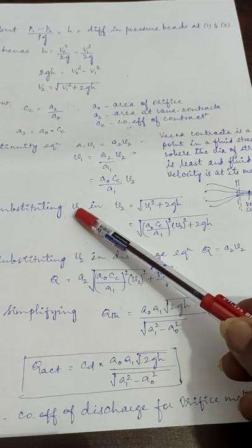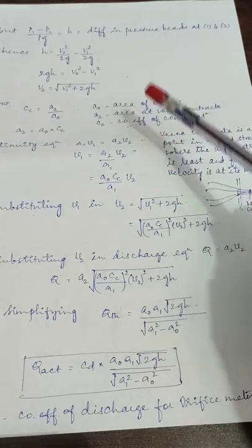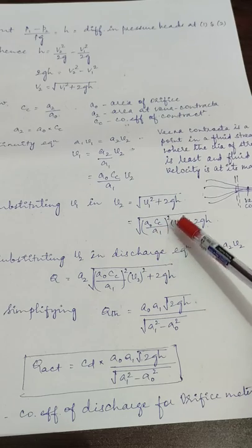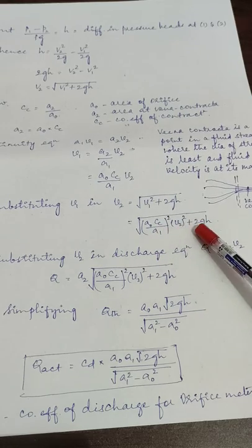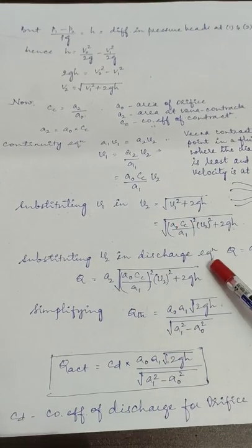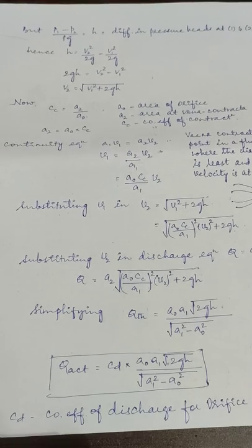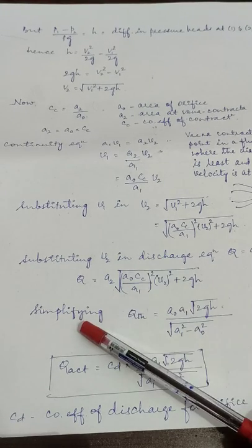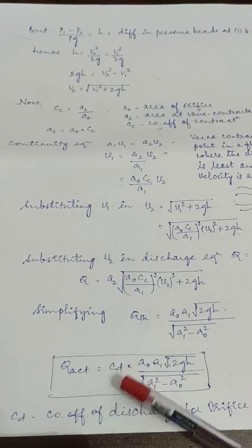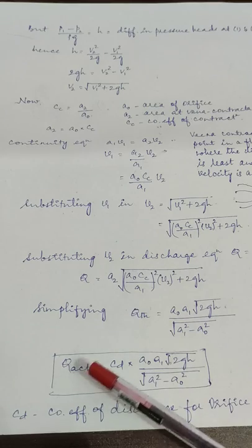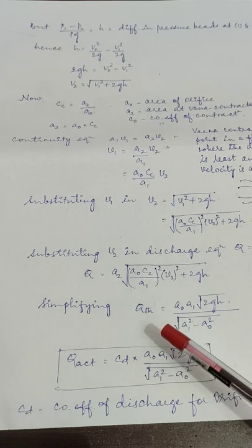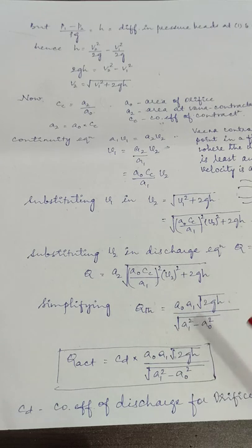Substituting V1 into the V2 equation, we get V2 in terms of A0, Cc, A1, and H. Substituting V2 into the discharge equation Q equals A2·V2 and simplifying, we obtain the theoretical discharge — as we have seen in the case of the venturimeter.